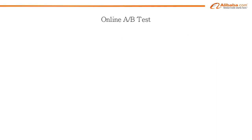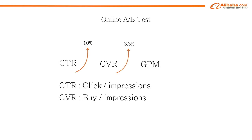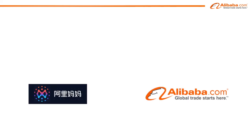Our online A/B test results show that Deep Interest Network brings a full range of enhancements: click-through rate is improved by 10%, conversion rate is improved by 3.3%, and gross merchandise volume is also improved by 12.6%. Deep Interest Network has been deployed in a commercial display advertising system in Alibaba, making the advertising system smarter.